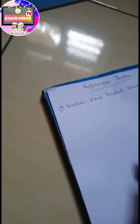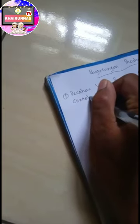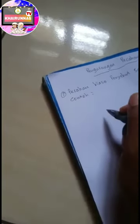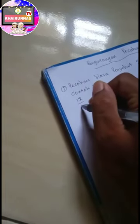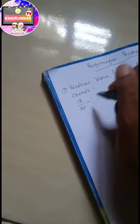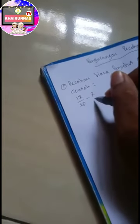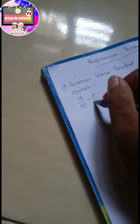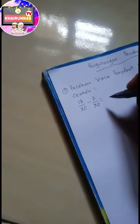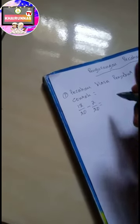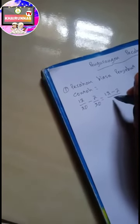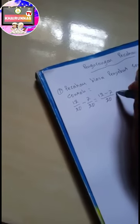Langsung kita ke contoh ya. Contoh: 12 per 20 dikurangi 7 per 20 sama dengan. Kalau ini langsung ya, jadi 12 dikurangi 7. Jadi 12 dikurangi 7, berapa hasilnya? 5 ya. 5 per 20.